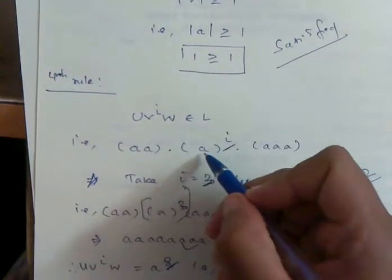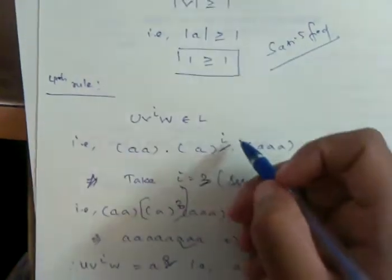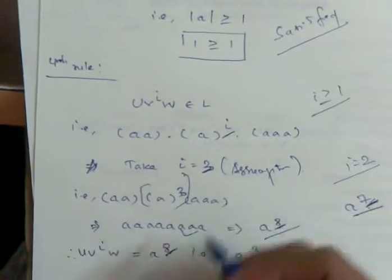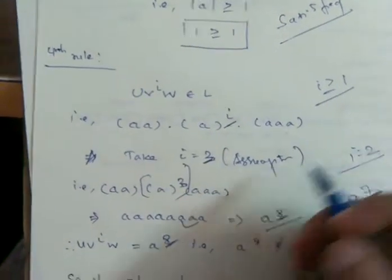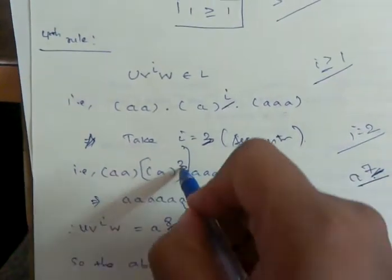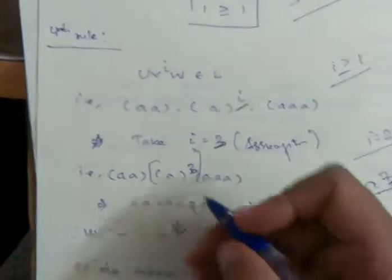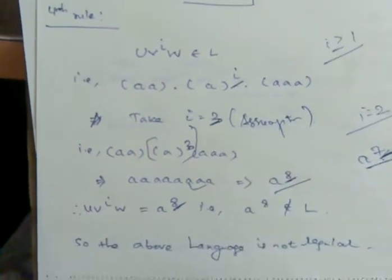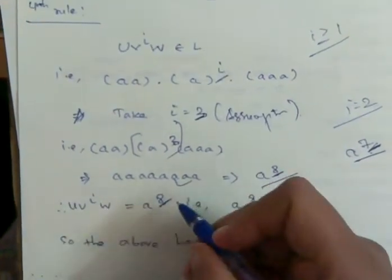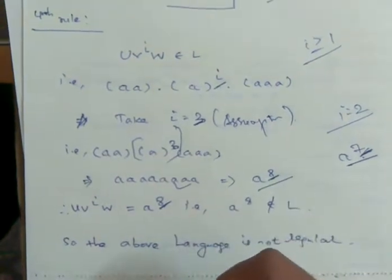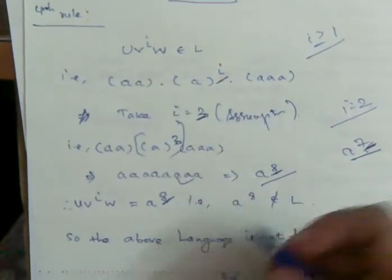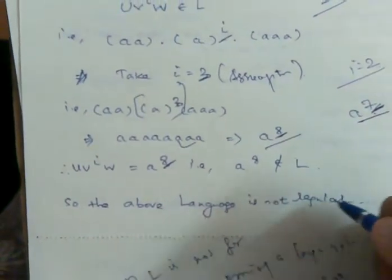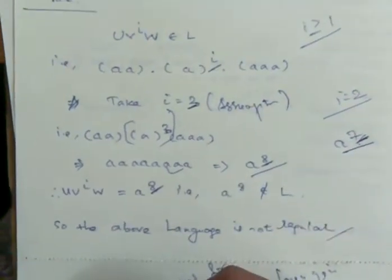Take i equals 3 as an assumption and apply it. With i equals 3, we get a^8. But a^8 does not belong to language L because 8 is not a prime number. So the above language is not regular.